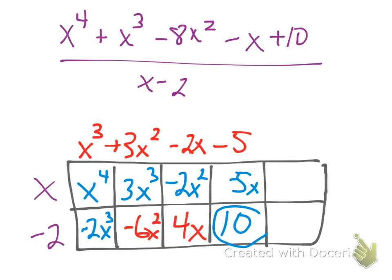Since this positive 10 matches my last term here, I no longer need these boxes, and I also know that it divides evenly. There is no remainder. I'll go over another example that has a remainder, but this one has no remainder. So my answer to this problem here is going to be x cubed plus 3x squared minus 2x minus 5.